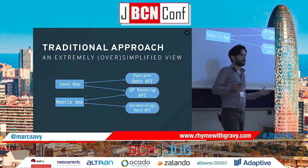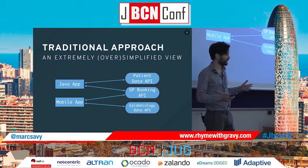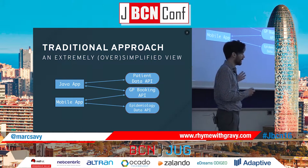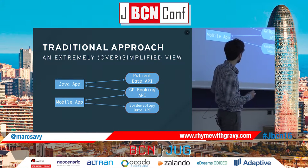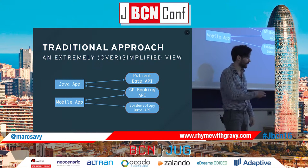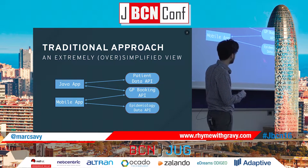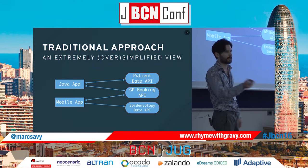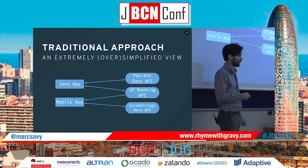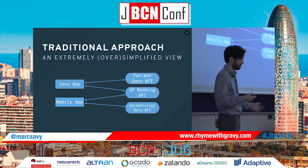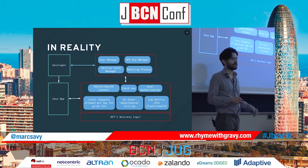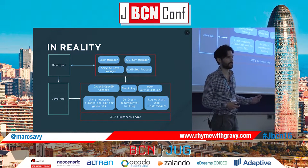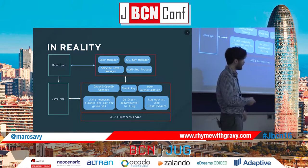So this is a really oversimplified graph. This is our traditional approach for how we imagine, and how lots of people draw in their diagrams and show their bosses, how you interact with an API. I have a couple of apps and a few APIs. They interact with each other through some sort of amorphous mechanism directly to each other, so this all seems relatively simple. Except that's not the reality of a production API.